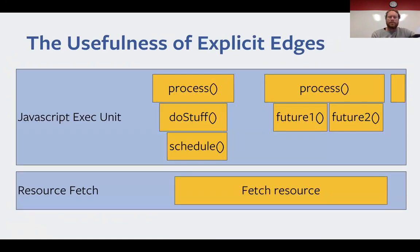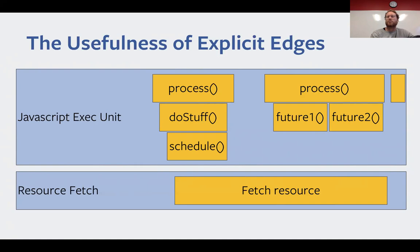Explicit edges are probably the biggest single difference between a span-based model and our model. All of these things can technically be represented within spans, but we've found that having explicit edges means we haven't needed to change the structure of the trace to add additional features. For example, we trace through browsers, including both the client-side JavaScript and the PHP running on the server, and there are actually three separate causality hierarchies that can occur within such a trace.